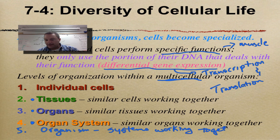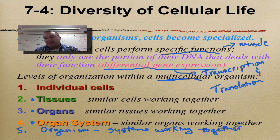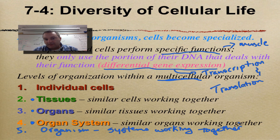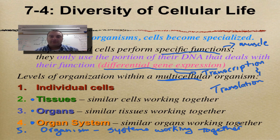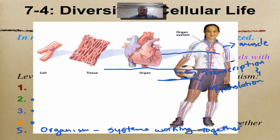In your body you've got your circulatory system — your heart and blood vessels — your pulmonary system which would be your lungs, your nervous system, your integumentary system which would be your skin, your muscular system, and your skeletal system. Put all those together and that makes up you — an organism. Here's a great picture to show you — a soccer player.